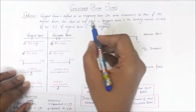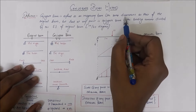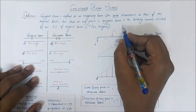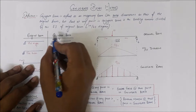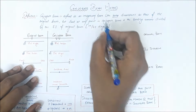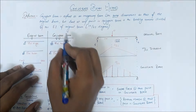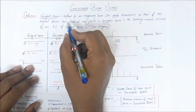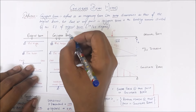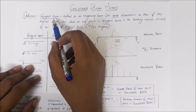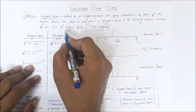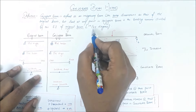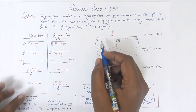The conjugate beam is defined as an imaginary beam with the same dimensions as that of the original beam, but the load at any point in the conjugate beam is the bending moment divided by EI of the original beam. So from the definition itself, we know there are two beams: the original beam and the conjugate beam. The loading put on the conjugate beam is the M/EI diagram of the original beam.